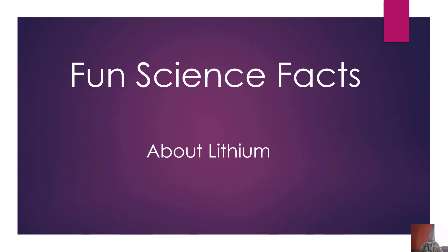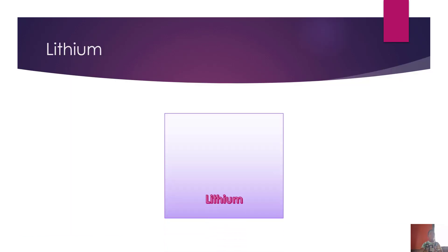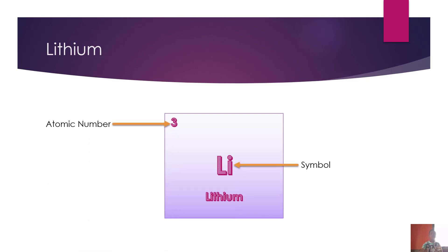Hello everybody. Today we are going to discuss some of the fun science facts about lithium. As we are going to discuss about the element lithium, Li is the symbol for it and its atomic number is 3 with 6.941 as its atomic weight.